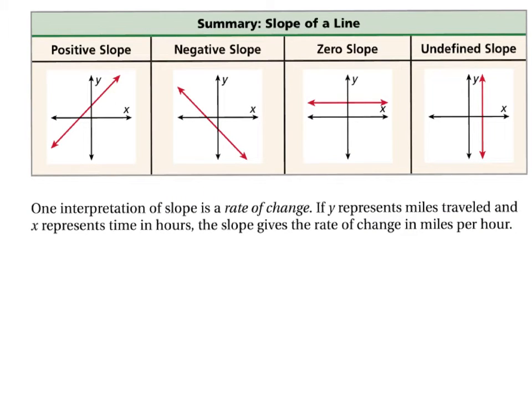Here's our summary. Positive slope, negative slope, zero slope, undefined slope. Now this part, you should have done, and I'm sure you have. But we're going to go over this in a little more detail. Slope is the rate of change of something. If y represents miles traveled, and x represents hours, the slope then would give a rate of change in miles per hour.